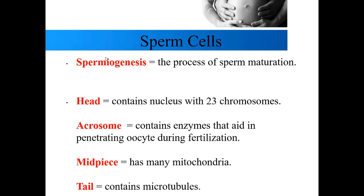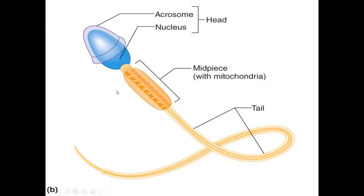The process of a sperm cell maturing is called spermiogenesis — the suffix 'genesis' means the creation of, so spermiogenesis is the creation of sperm cells. Each sperm cell has different components: the head, which contains the nucleus and 23 chromosomes; the acrosome, which covers the head like a hat and contains digestive enzymes to help the sperm penetrate the egg; the mid piece, where you find a very high number of mitochondria; and the tail, which contains microtubules.